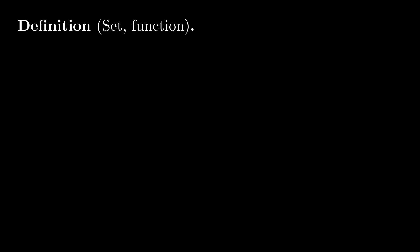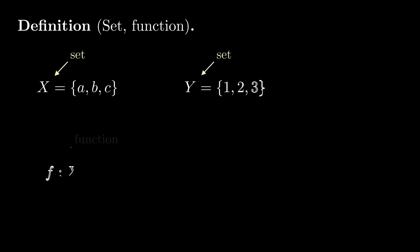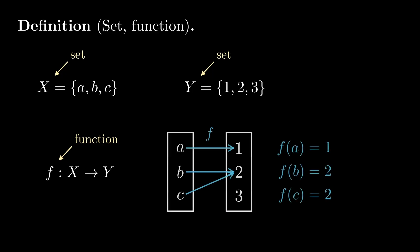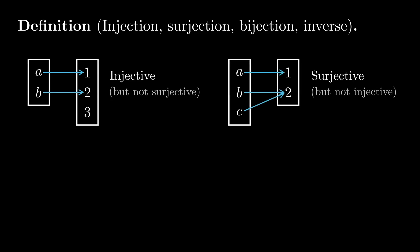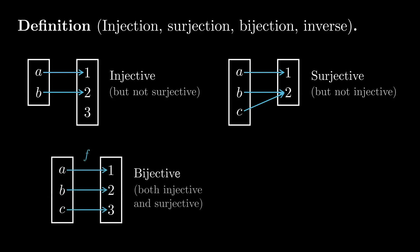First we give a brief overview of the necessary set theory. Recall that a set is a collection of objects, and that a function from a set x to a set y is just a way to associate to each element of x an element of y. We say that such a function is injective if no two elements of x map to the same element of y, and we say that it's surjective if every element of y is mapped to. If a function is both injective and surjective, we say that it's bijective, and we call it a bijection.